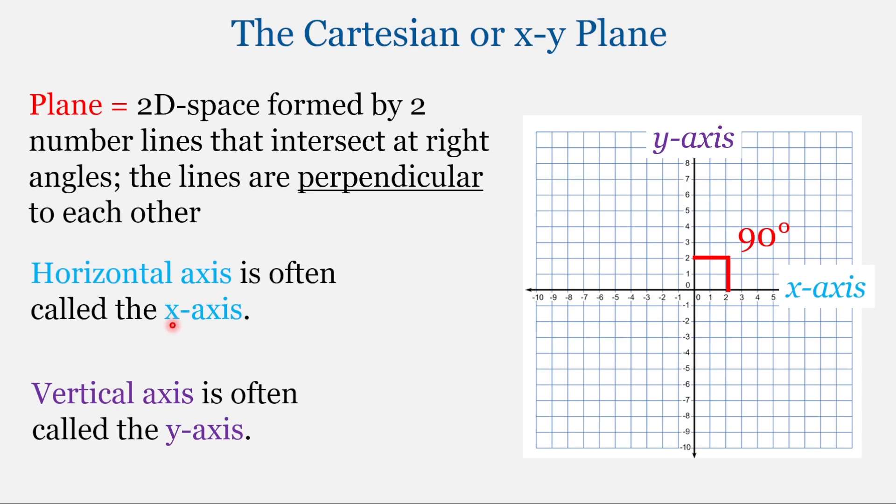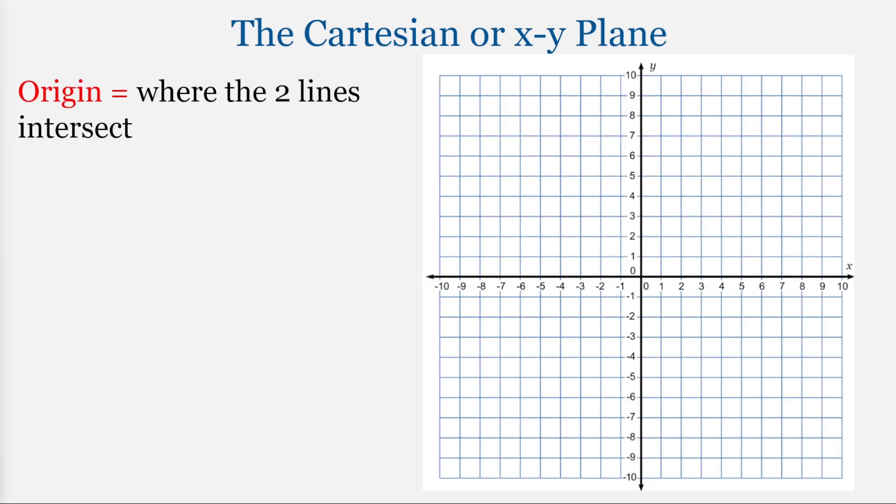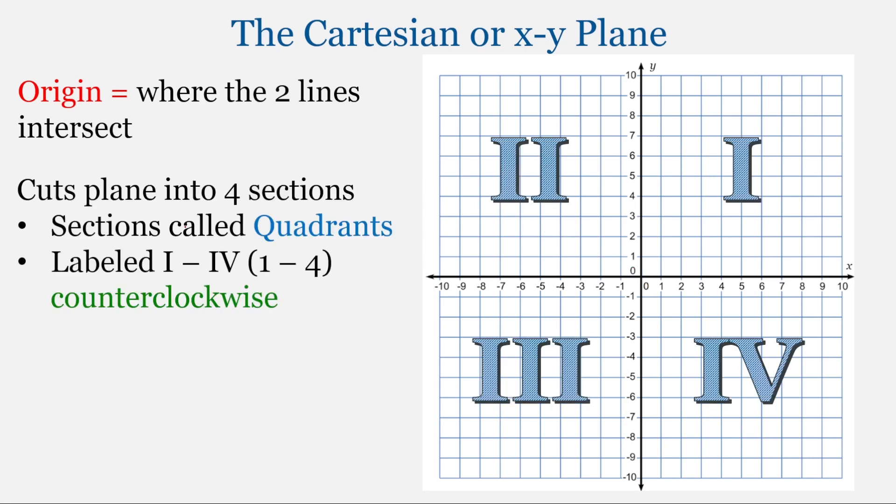Now because these are often called the x and y-axis, the plane is sometimes called the xy-plane. The origin is where the two lines intersect. And when the two lines intersect, they cut the plane into four sections. And these sections are called quadrants.